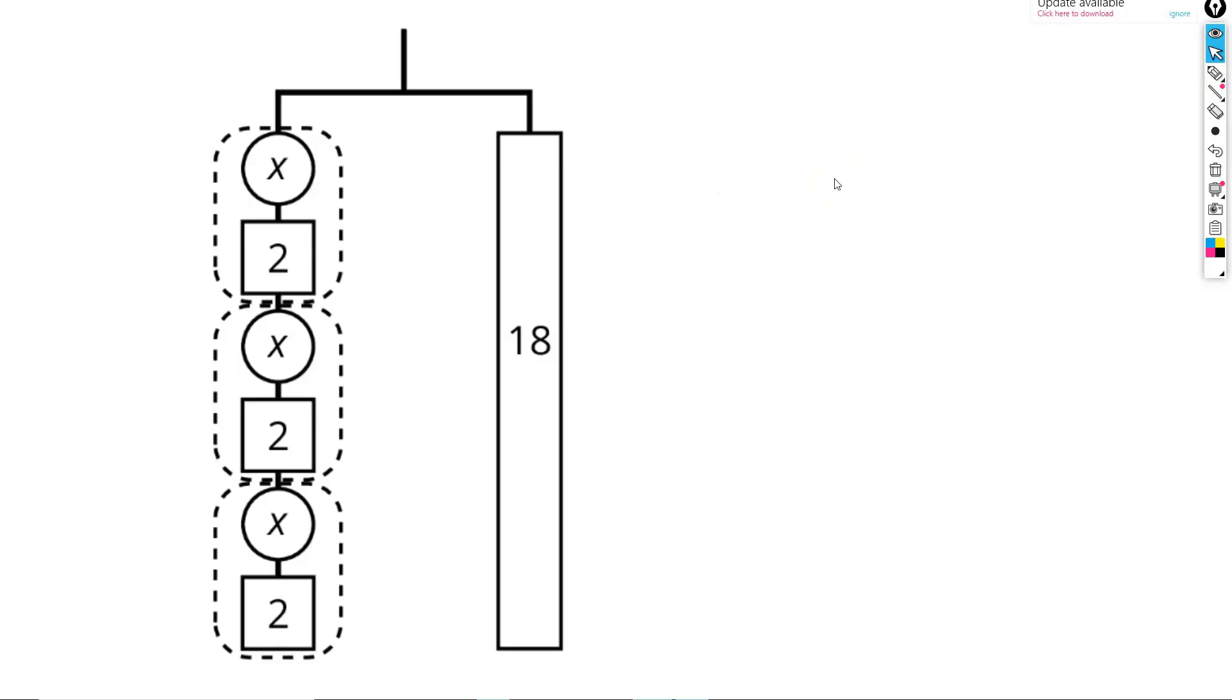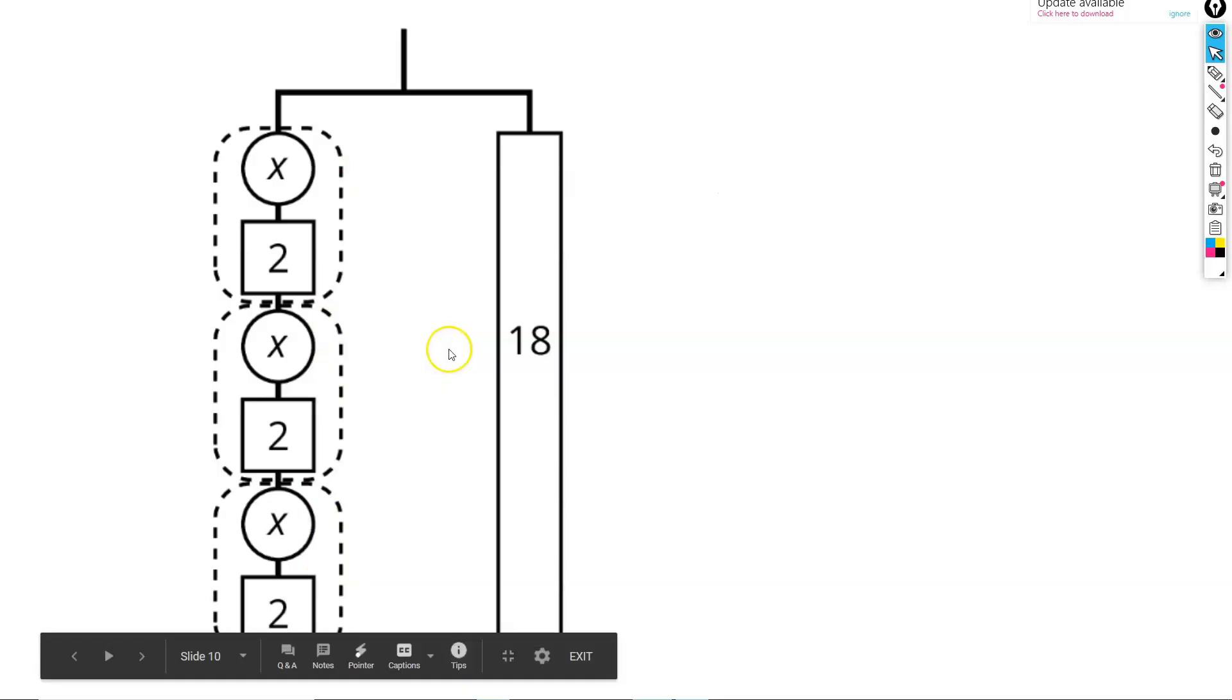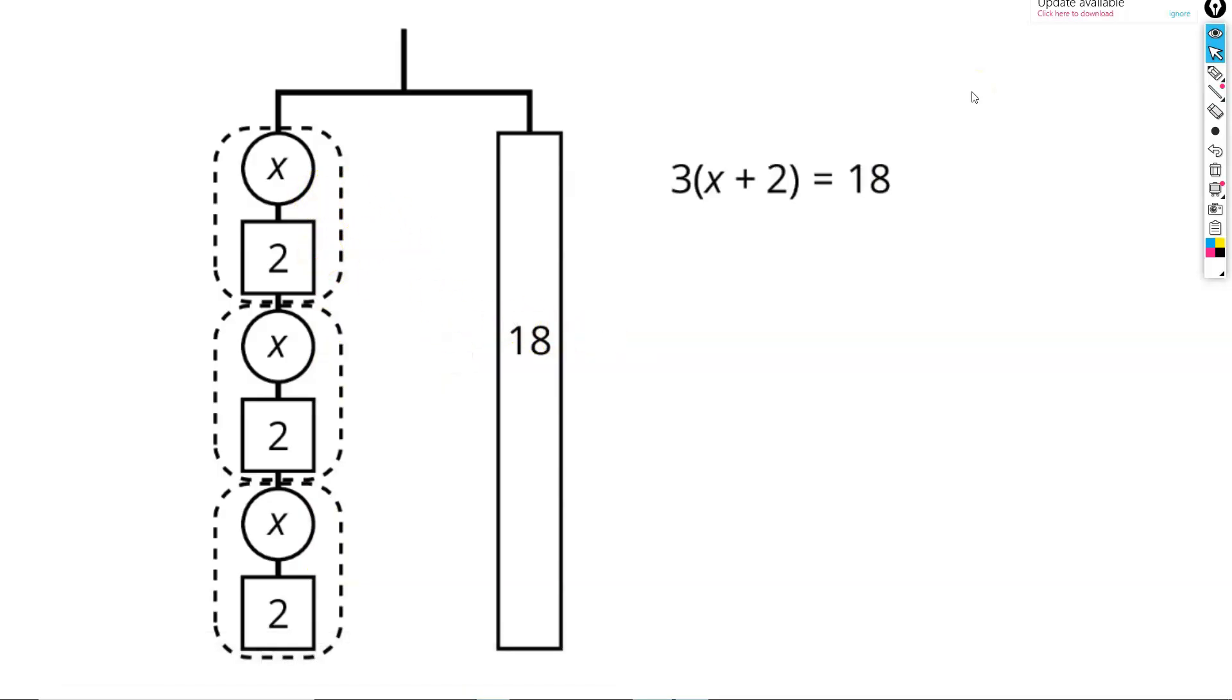Instead, we're going to notice that the left side of our hanger consists of 3 groups of an x and a 2. We can represent this with the equation 3 multiplied by the quantity x plus 2 equals 18, because we have 3 sets of x plus 2.